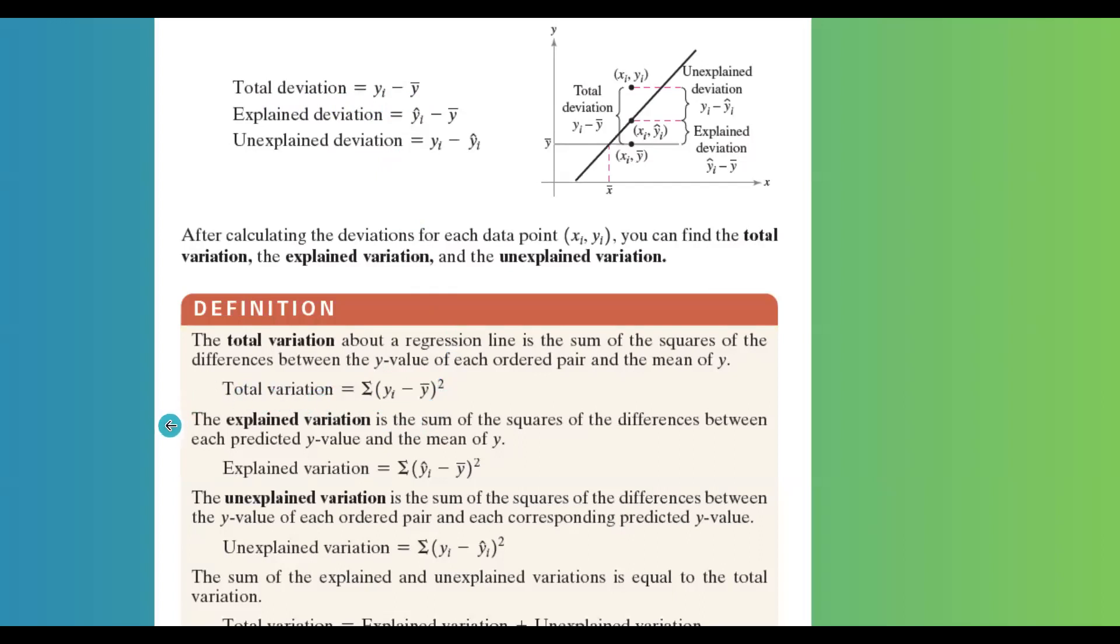The explained variation is the sum of the squares of the differences between each predicted y value and the mean of y. The expected variation is the summation of yi hat minus y bar to the second power. yi hat minus y bar is explained deviation. When you take the summation, you're defining explained variation.